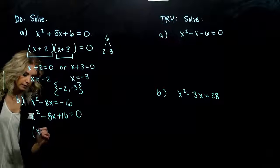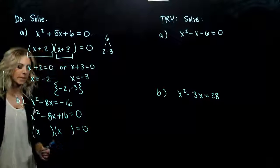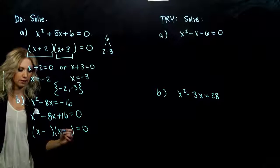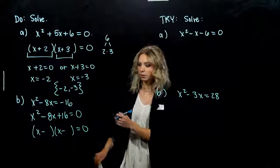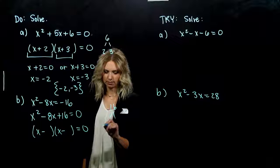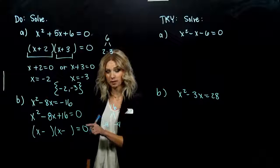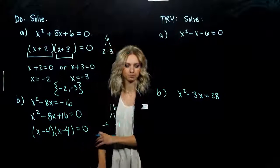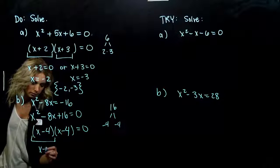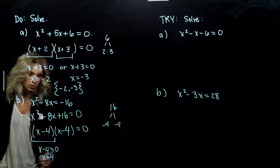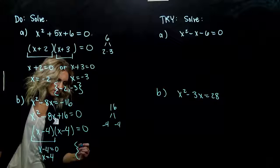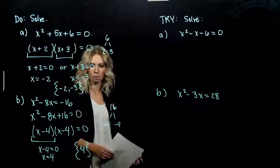I've got a coefficient of 1 on the front, so I know it's going to be an x and an x. When I add I need a negative, when I multiply I need a positive — so I need a negative and a negative. I need to break up 16 into things that multiply to 16 and add to negative 8: that's negative 4 and negative 4. It's a perfect square trinomial. Either chunk equals 0 gives us x equals 4. Since both factors are the same, the solution set contains only x equals 4.